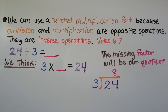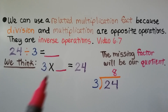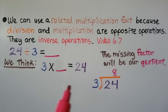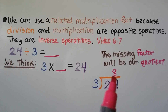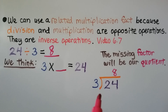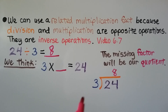We can use a related multiplication fact because division and multiplication are opposite operations — they are inverse operations that undo each other. We have 24 divided by 3. We need to find the quotient, so we think: 3 times some number is equal to 24. The missing factor will be our quotient. If you remember that 3 times 8 is equal to 24, we know our quotient is 8. We can also write this with the division bracket: 24 divided by 3 is equal to 8.